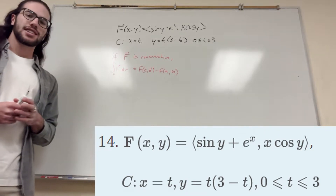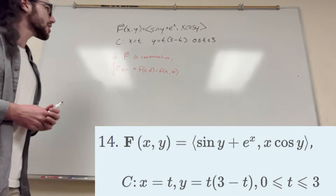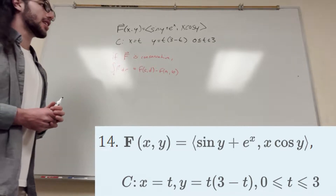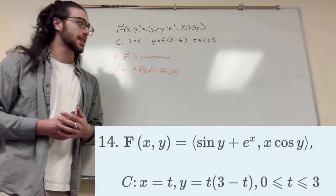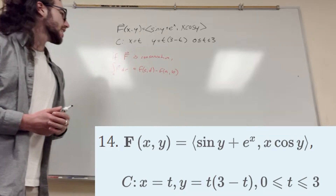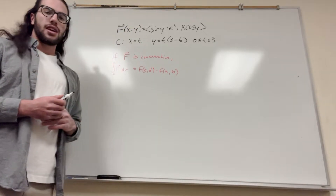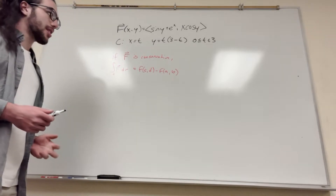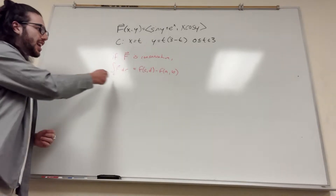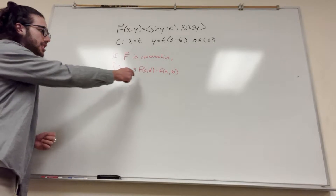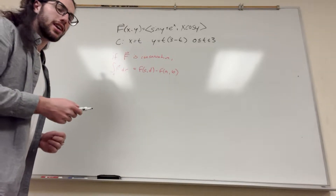What's up, Cal gang? We got some fundamental theorem of line integrals question here. It gives us a force field equal to sine y, e to the x, cosine y. It gives us a line that it's following to get there. What the fundamental theorem of line integrals tells us is that if f is conservative, then the line integral is just equal to the function at our endpoint minus the function at our starting point.